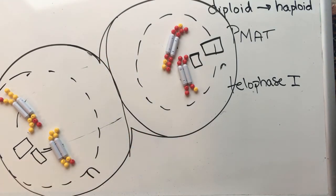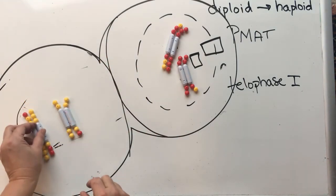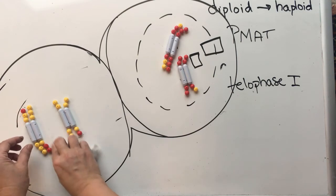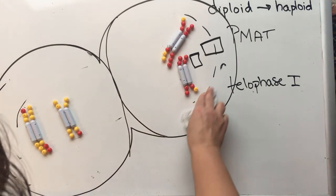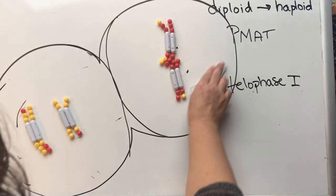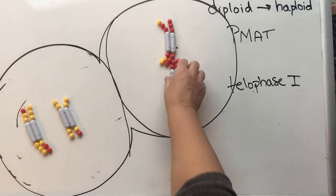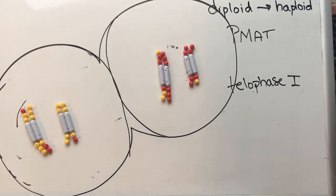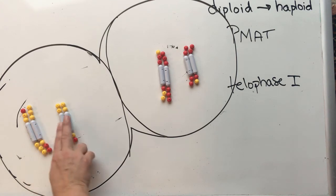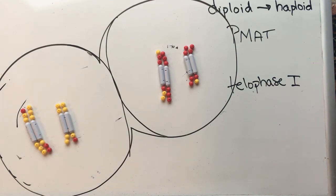If we look at our two new cells, we have one copy of chromosome 1 in sister chromatid form — but we still call it one chromosome because it has one centromere — and one copy of chromosome 2. Our chromosomes are still stuck together in a sister chromatid structure, so we have to get those apart. That's pretty much what meiosis 2 is all about.